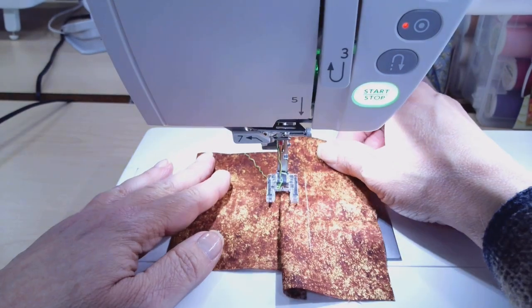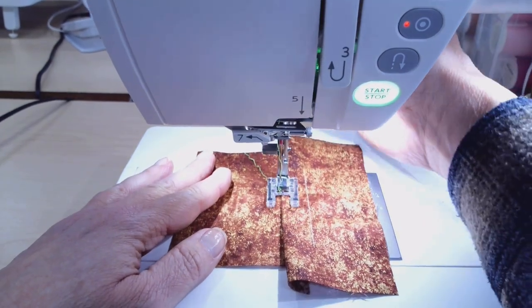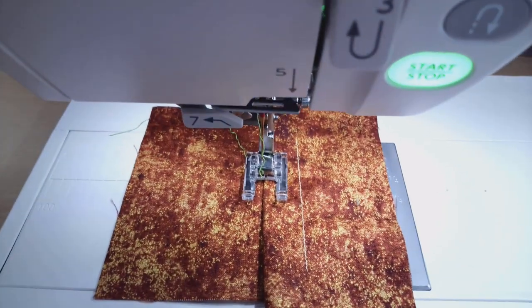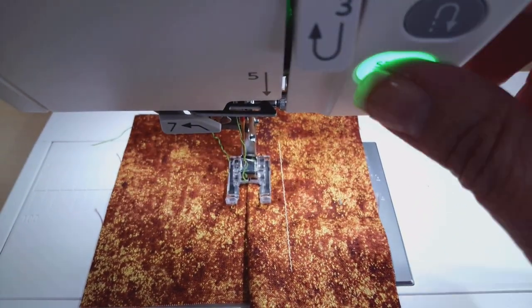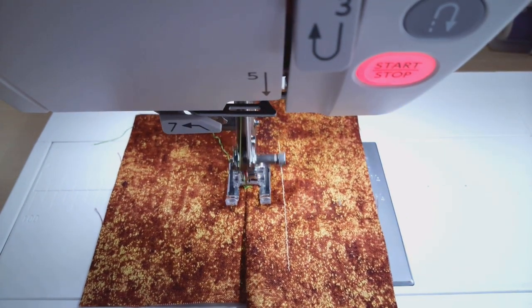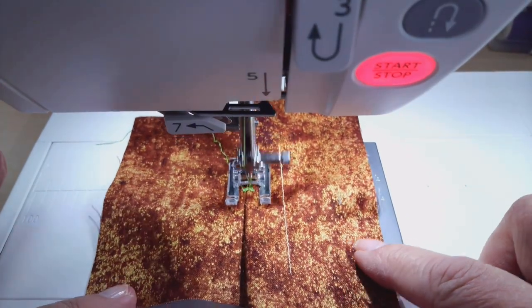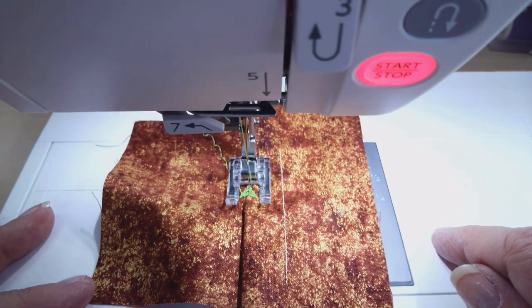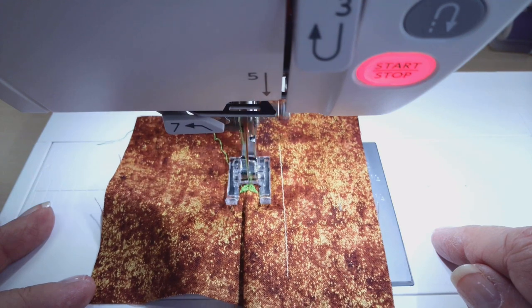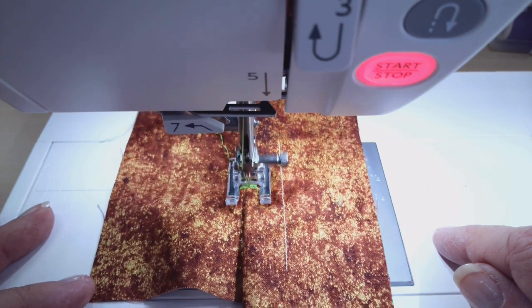So let me show you how that stitches. I'm going to get in a little closer so you can see. So it creates kind of a triangular look. You can see it's going to go back and forth and then over the top for the little decorative portion of the stitch.